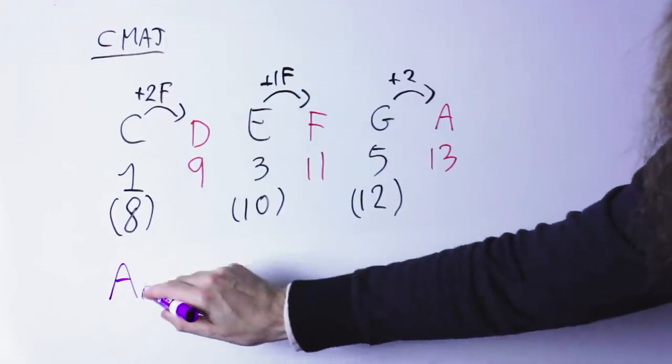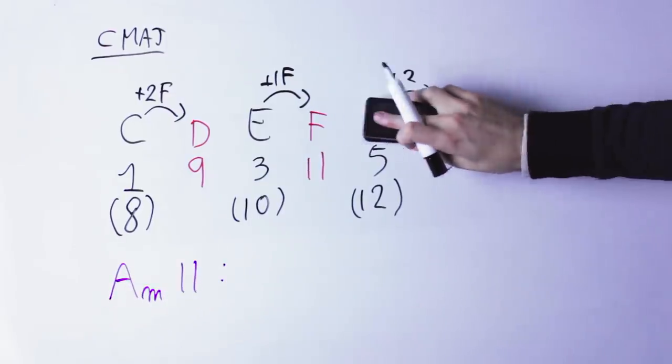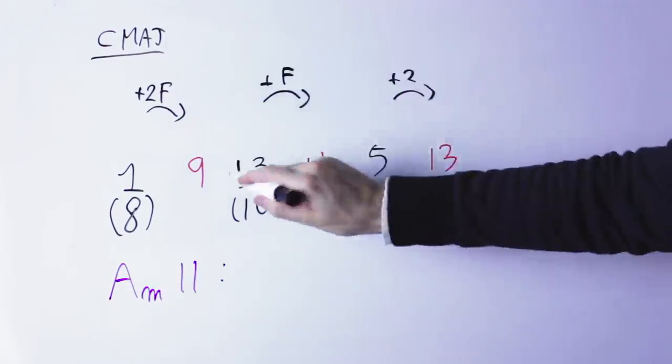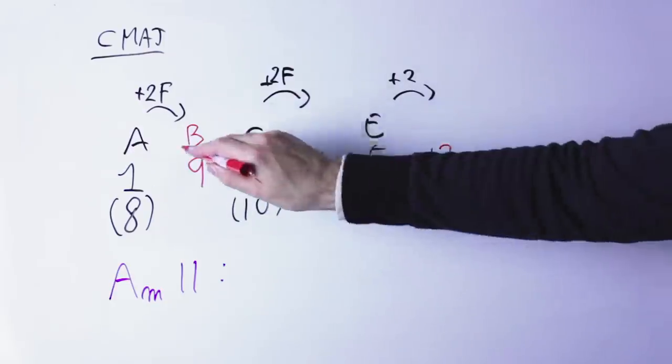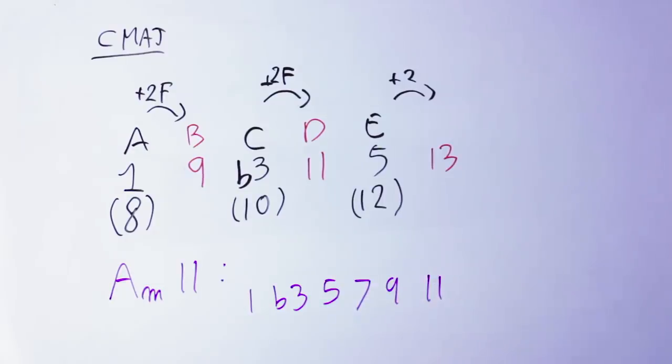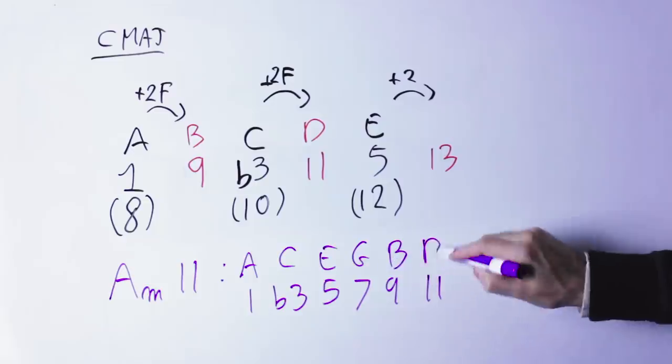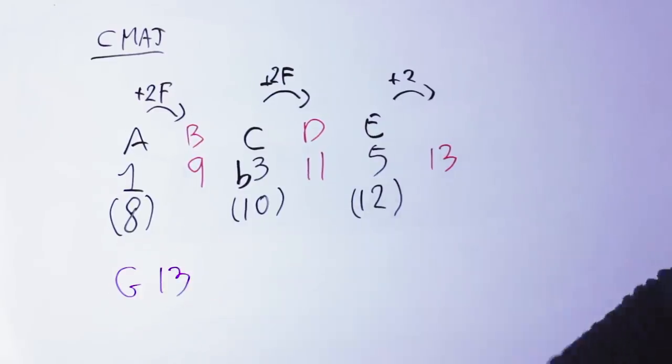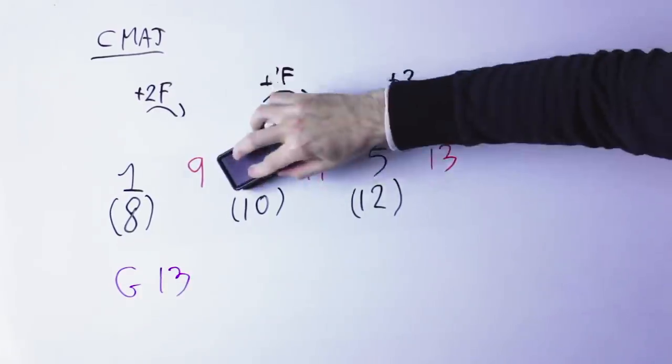And you can do this, of course, with any root. So if you have, for instance, an A minor eleven, you have to put in the A minor triad, one flat three, five, then again, all the odd numbers until the eleven. So seven, nine, eleven. So the notes are A, C, E, G, B, D.